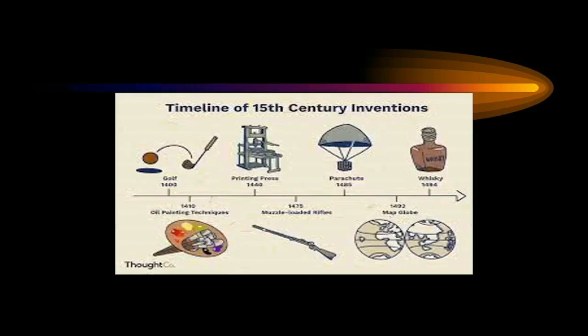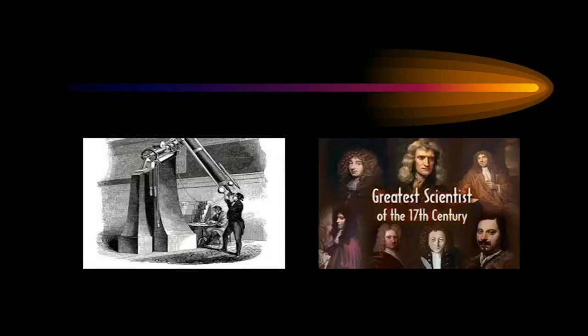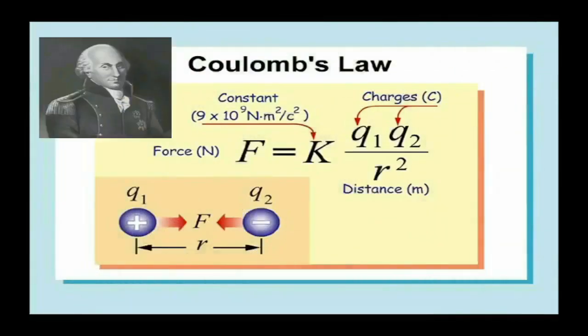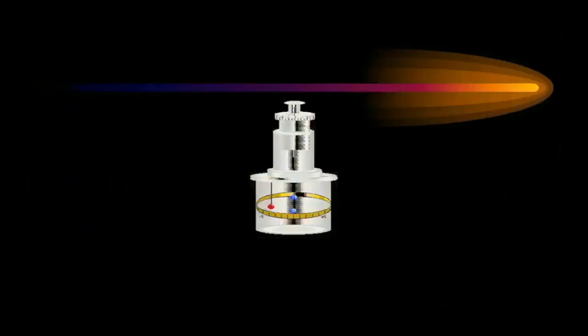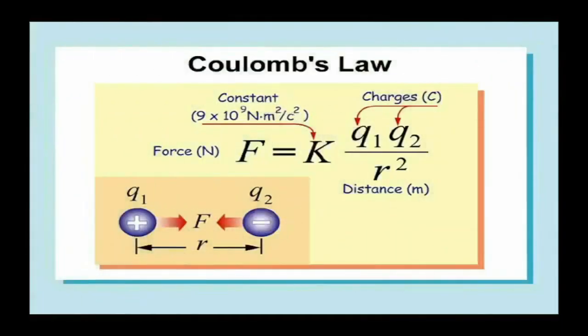It was not until 1785 when the French physicist Charles Augustin de Coulomb published his first three reports on electricity and magnetism, stating his law. This publication was essential to the development of the theory of electromagnetism. He used a torsion balance to study the repulsion and attraction forces of charged particles, and determined that the magnitude of the electric force between two point charges is directly proportional to the product of the charges and inversely proportional to the square of the distance between them.